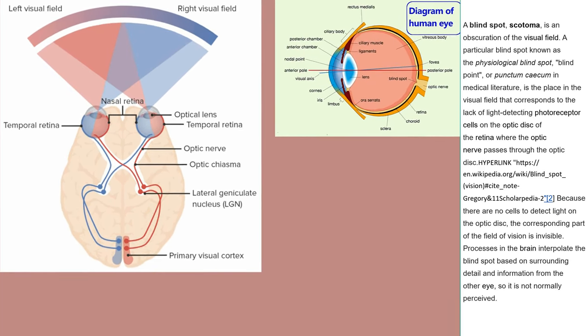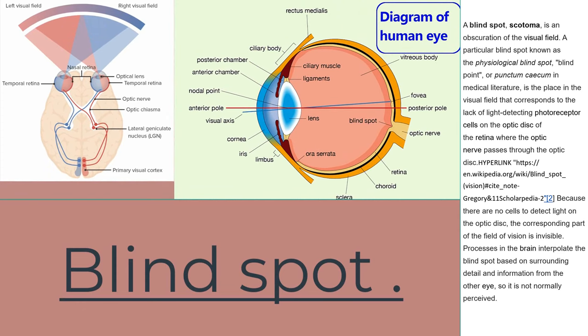A blind spot or scotoma is an obscuration of the visual field. A particular blind spot known as the physiological blind spot, blind point, or punctum cecum in medical literature, is the place in the visual field that corresponds to the lack of light detecting photoreceptor cells on the optic disc of the retina where the optic nerve passes through the optic disc. Because there are no cells to detect light on the optic disc, the corresponding part of the field of vision is invisible. Processes in the brain interpolate the blind spot based on surrounding detail and information from the other eye, so it is not normally perceived.